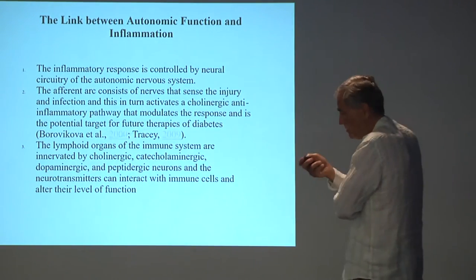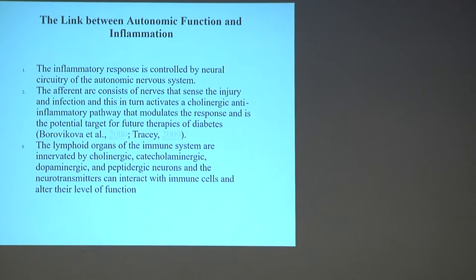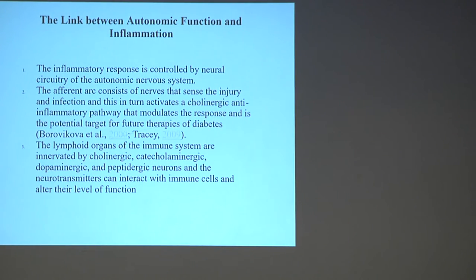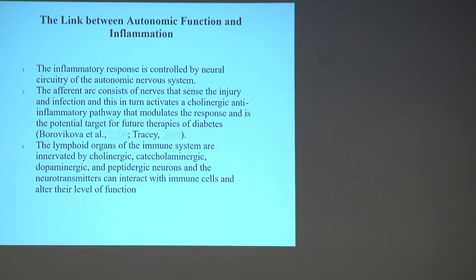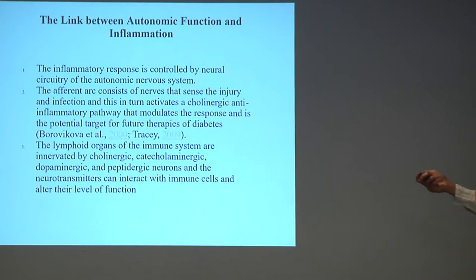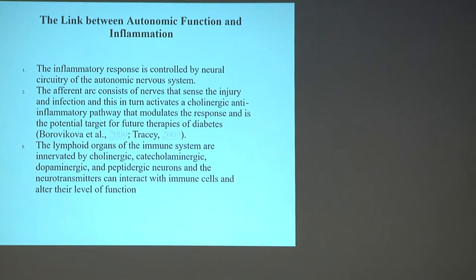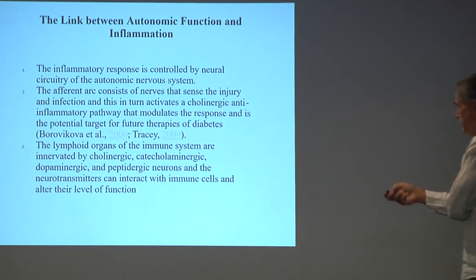The inflammatory response is controlled by neural circuitry related to the autonomic nervous system. There is an inhibitory arc mediated through the vagus nerve and through the parasympathetic nervous system that can calm down the inflammatory response to many processes including sepsis and trauma. The lymphoid organs and immune system cells are innervated by cholinergic, catecholinergic, dopaminergic, and peptidergic neurons, and neurotransmitters can interact with immune cells and alter their function.